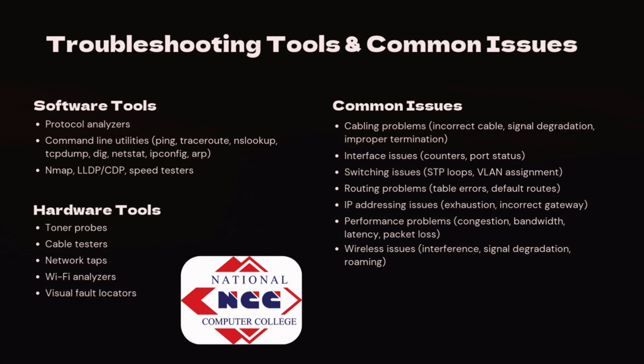Be ready for common troubleshooting issues. These include cabling problems like incorrect cables or improper termination, interface issues such as counters or port status errors, switching issues including spanning tree loops and VLAN assignments, routing problems like table errors or missing default routes, IP addressing issues such as exhaustion or wrong gateways, performance problems like congestion, latency, and packet loss, and wireless issues such as interference, signal degradation, and roaming difficulties.